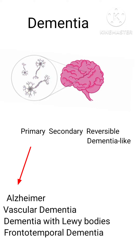Then there is vascular dementia, caused by damage to the vessels that supply blood to the brain. Dementia with Lewy bodies is characterized by abnormal balloon-like clumps of protein found in the brain. Frontotemporal dementia is characterized by breakdown of nerve cells and their connections in the temporal lobe and frontal lobe of the brain.